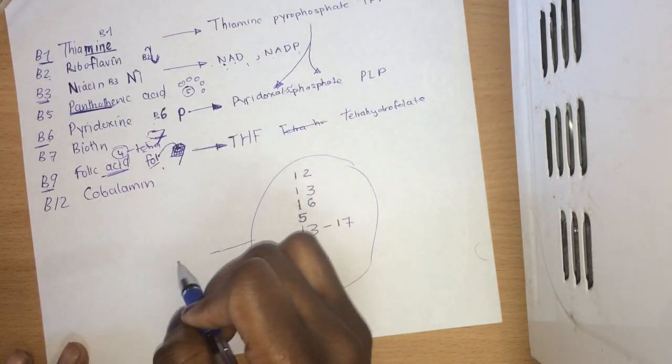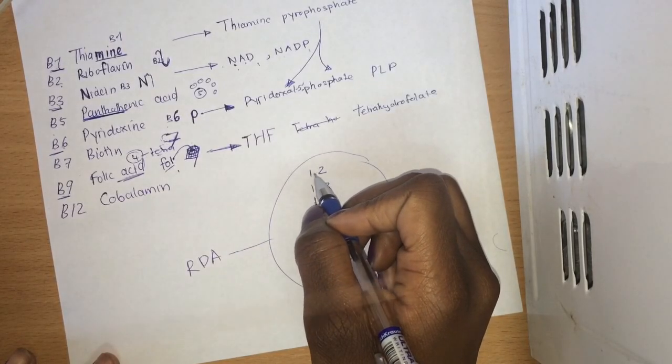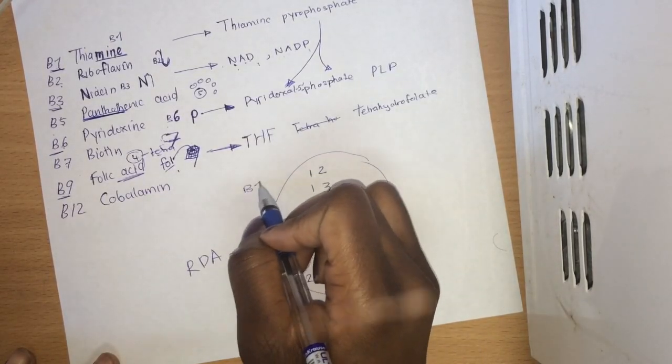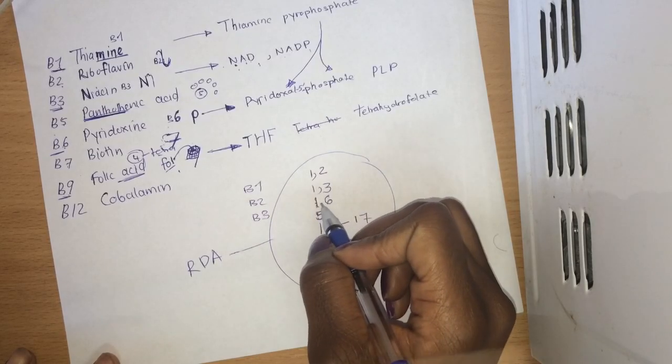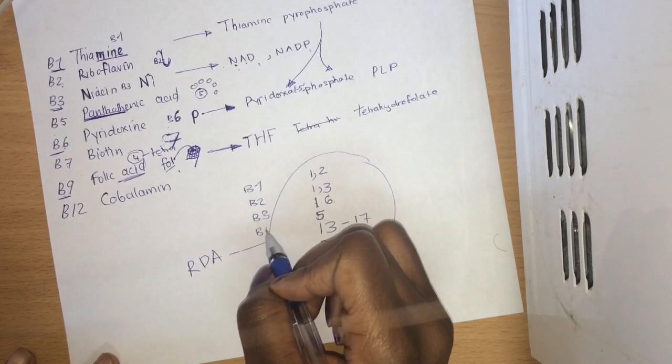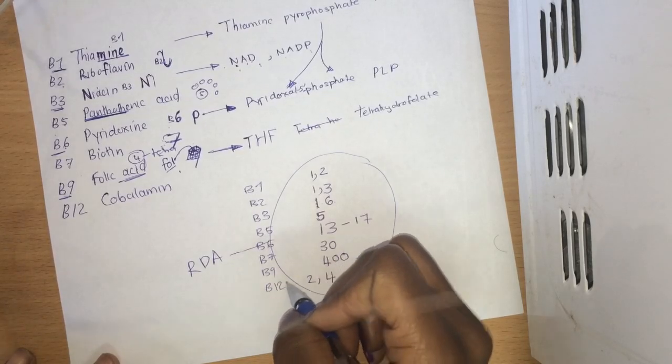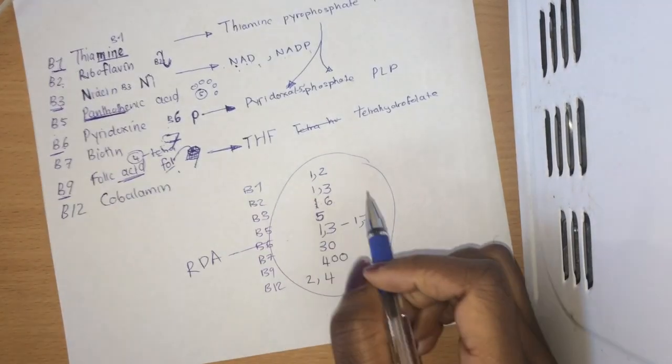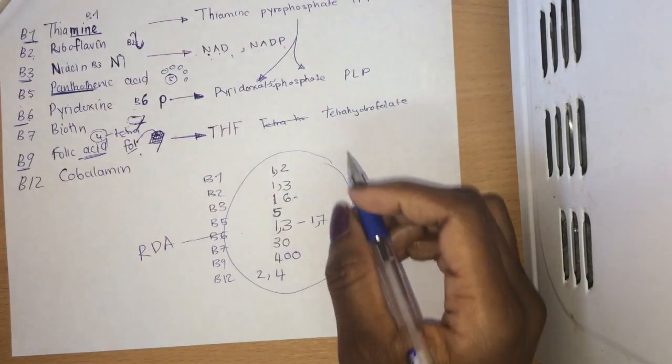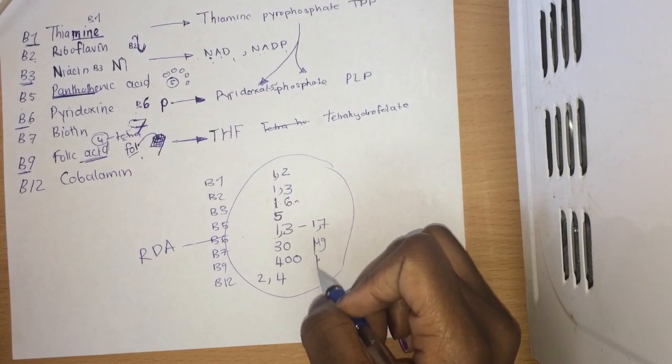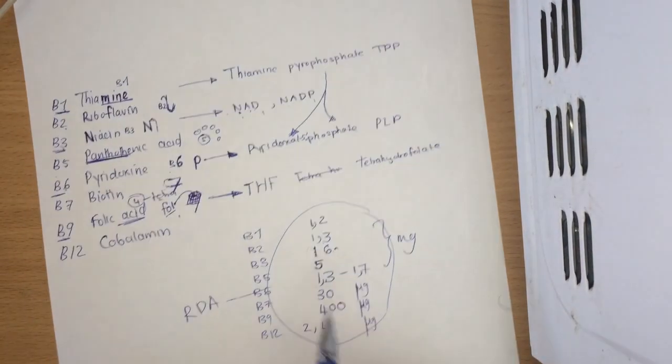For B1 it will be 1.2, for B2 it will be 1.3, for B3 it will be 16, B5, B6, B7, B9 and B12. For B6 will be 1.3 to 1.7. All your ones have points, just remember that, except for 16. And then the last three are measured in micrograms, micrograms, micrograms, and then the rest in milligrams.